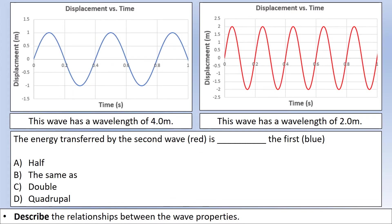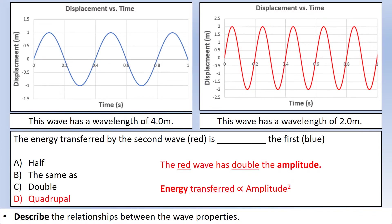Now let's compare two different waves. First, compare the energy transferred by the red wave versus the blue wave. Pause the video and work out the relationship. The key thing here is the amplitude: the red wave has double the amplitude of the blue wave. Many people would incorrectly say the energy transferred is double, forgetting that energy is directly proportional to amplitude squared. Doubling the amplitude means four times as much energy — so the answer is quadruple.